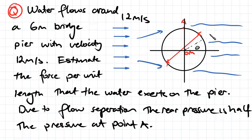And then we've also got some separation at the end here and what we have to do is estimate the force per unit length that the water exerts on the pier. So due to this flow separation that we do have, the rear pressure is actually equal to half the pressure at A.